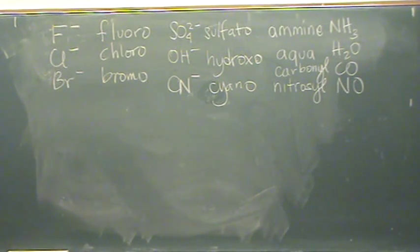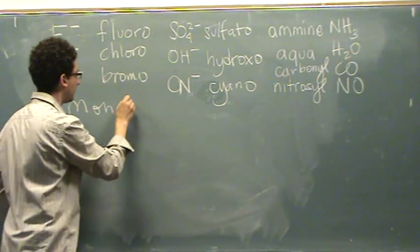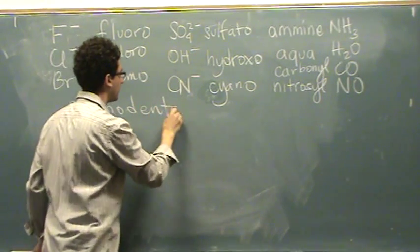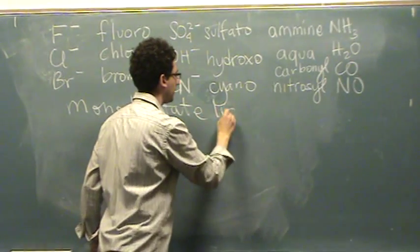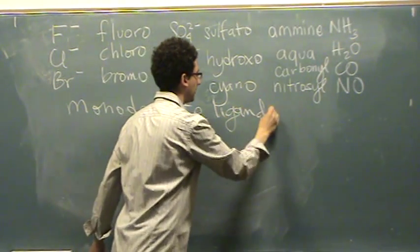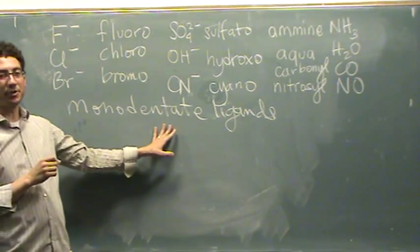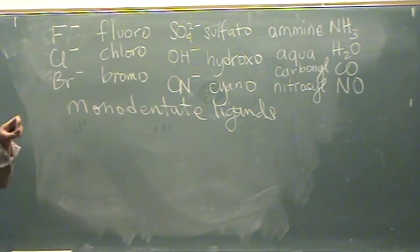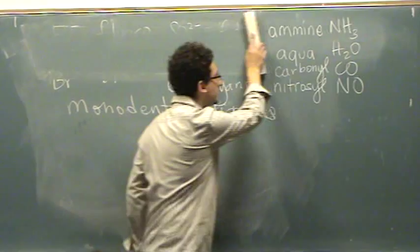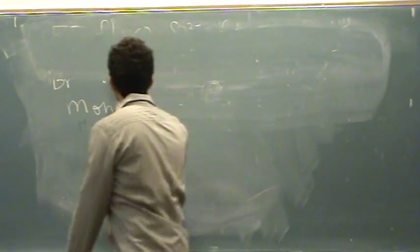These are called monodentate ligands. Monodentate means one, dentate means tooth. So it's a one tooth ligand. That means it bites onto the transition metal in one location only. Okay, now let's do the next type. And those are all listed in a table in your book.